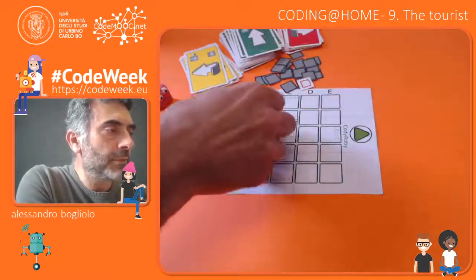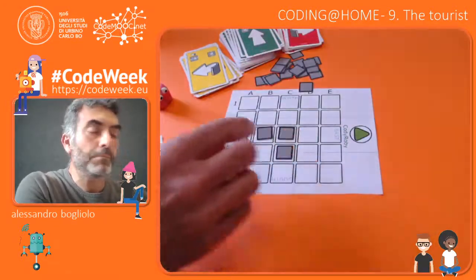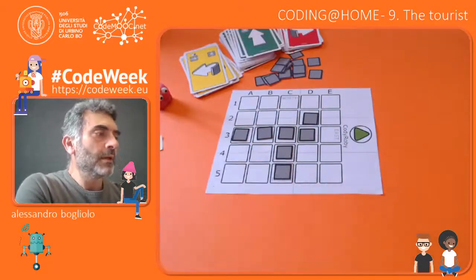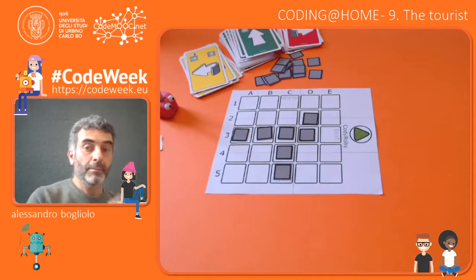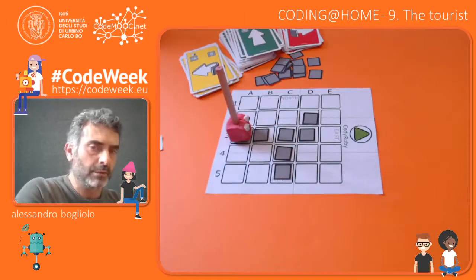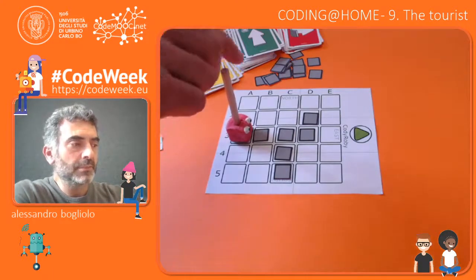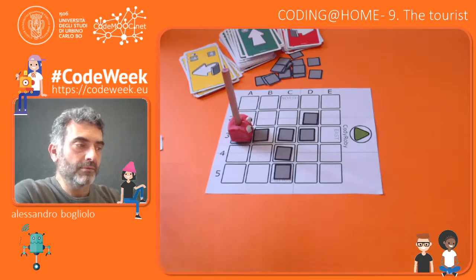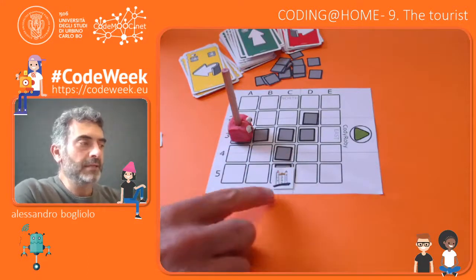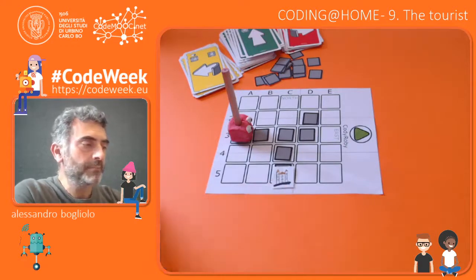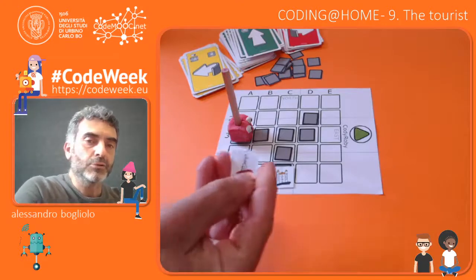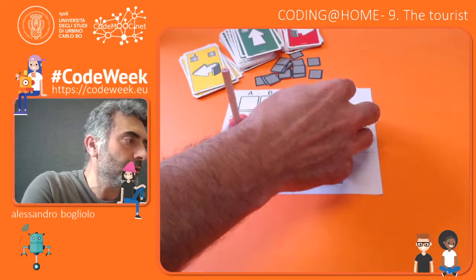In order to play the game, let me build the path. This time I'm building a path before providing the instructions. This is not just one path — as you can see there are two different paths leading to two different positions from the same starting point. The tourist, our robot, is here at the beginning of these two possible paths. At the end of one of the two I place a monument of Urbino — this is the Ducal Palace, called Torriccini because there are two towers. And this is a statue of Raphael the painter, who was born in Urbino.